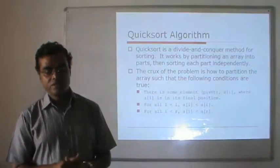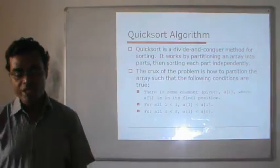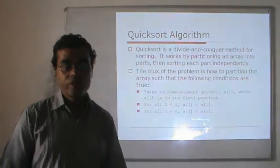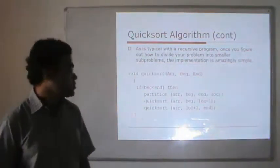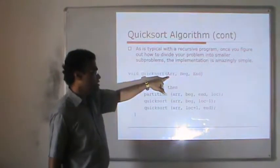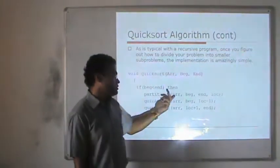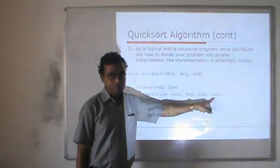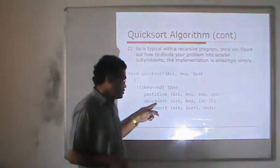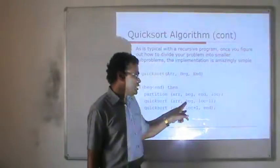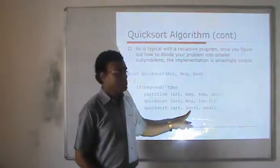Here, how to partition the array: we find some element — the pivot element A[i] — where A[i] will be at its final position. All elements before A[i] are less than A[i], and all elements after A[i] are greater than A[i]. Initially, the original array is given with the beginning and end positions. This process keeps repeating while beginning is less than end. First, we perform the partition of the array and find the location — meaning the partition or pivot element — and our array is divided into two parts. These two parts are sorted separately: one part from beginning to location minus one, and the other from location plus one to end.